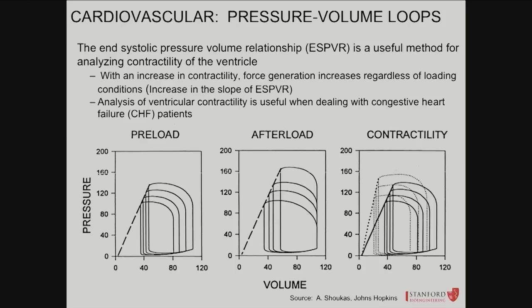If you change contractility altogether — comparing two hearts — increasing contractility means for the same end-diastolic volume you get a bigger stroke volume. The dotted line has higher contractility than the black line; end-diastolic volume is 80 cc's in both. In the low-contractility black line heart, stroke volume is about 40. In the dotted line heart, stroke volume is larger from the same preload, because the heart has intrinsically more strength. The PV loop widens, and the slope of the ESPVR changes, since contractility is the independent variable, not resistance.